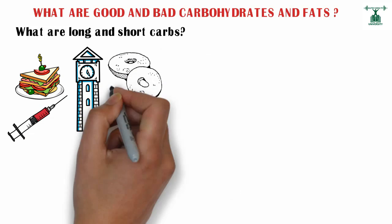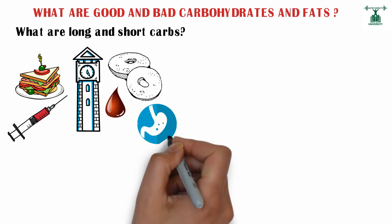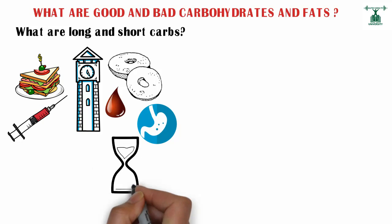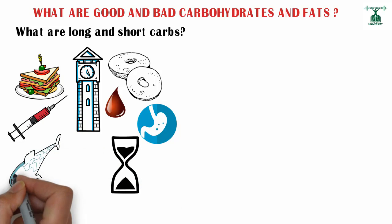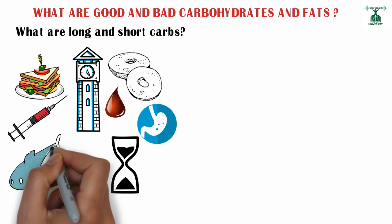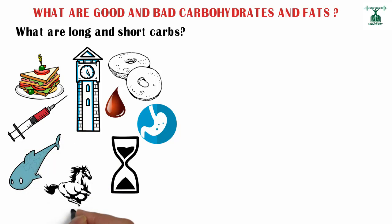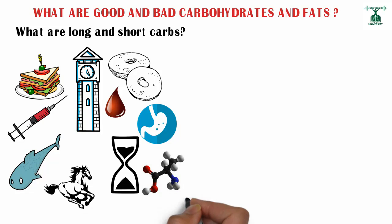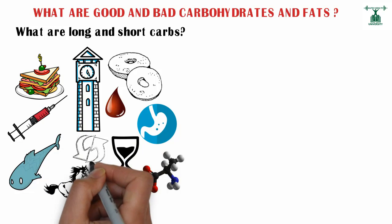Long carbohydrates take longer to enter the bloodstream as they are digested slowly owing to their complex nature. In other words, they are consumed whole without processing. On the contrary, short carbs split their way into the bloodstream because they do not require much digestion. They are usually the processed forms of carbohydrates. Short carbs also do not last long in the bloodstream, unlike long carbs.